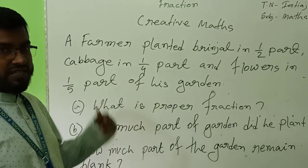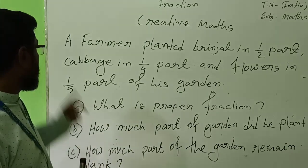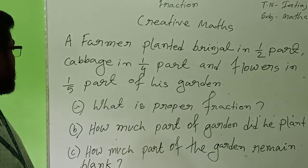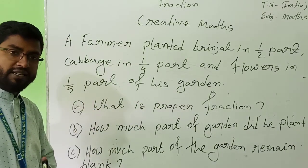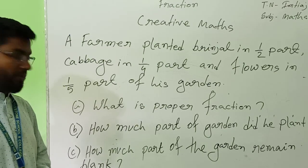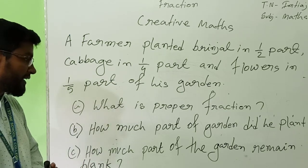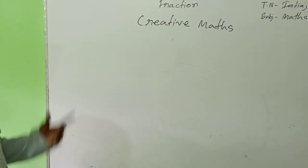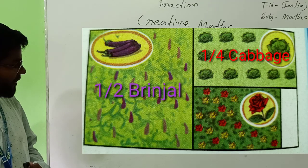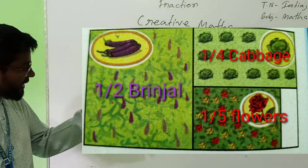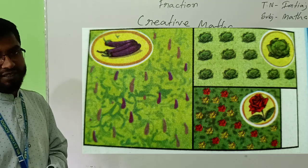So I want us to read this creative maths. First, the stem. A farmer planted green vegetables in 1/2 part, cabbage in 1/4 part, and flowers in 1/5 parts of his garden. This is the stem. Now first question: what is proper fraction? We need to give a definition and example. Then, how much part of the garden did he plant? How much part of the garden remains blank? See the picture: 1/2 part brinjal, 1/4 part cabbage, 1/5 part flowers, and this part is blank. This is the stem. Now first question solution.